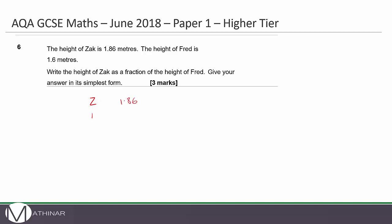So it says write Zack as a fraction of the height of Fred. That would be 1.86 divided by 1.6.